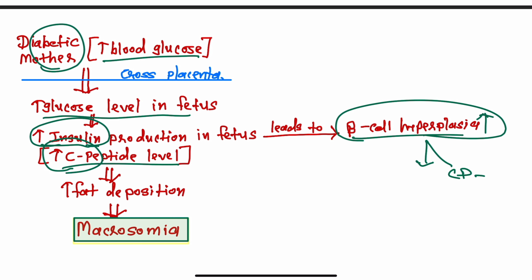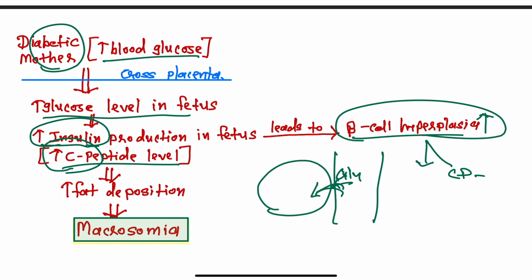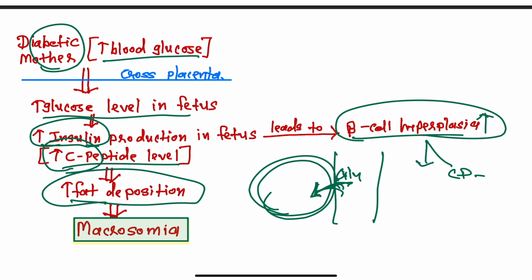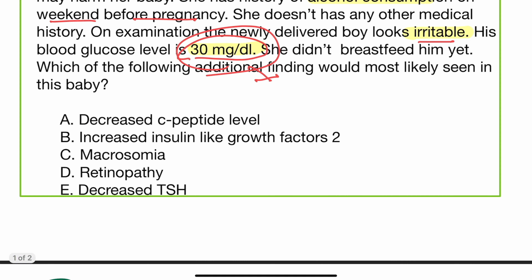Insulin works on adipose tissue and other cells by increasing glucose uptake inside the cell. Whenever the glucose level increases, insulin decreases blood glucose by transferring glucose into the cells, causing the cells to enlarge. This leads to fat deposition in the body, which further leads to macrosomia of the fetus. Organomegaly may also be seen, but the most prominent finding is macrosomia, with body weight higher than normal. So the correct answer is macrosomia.